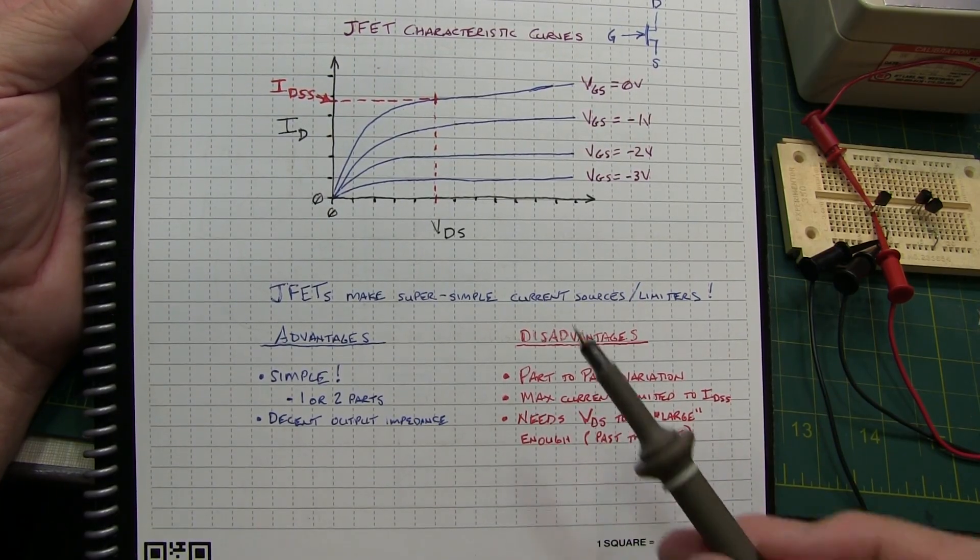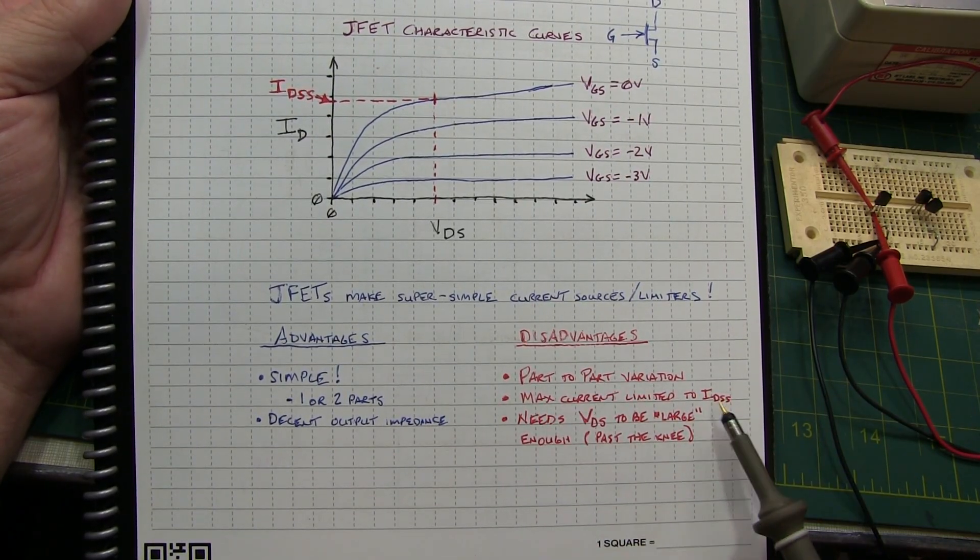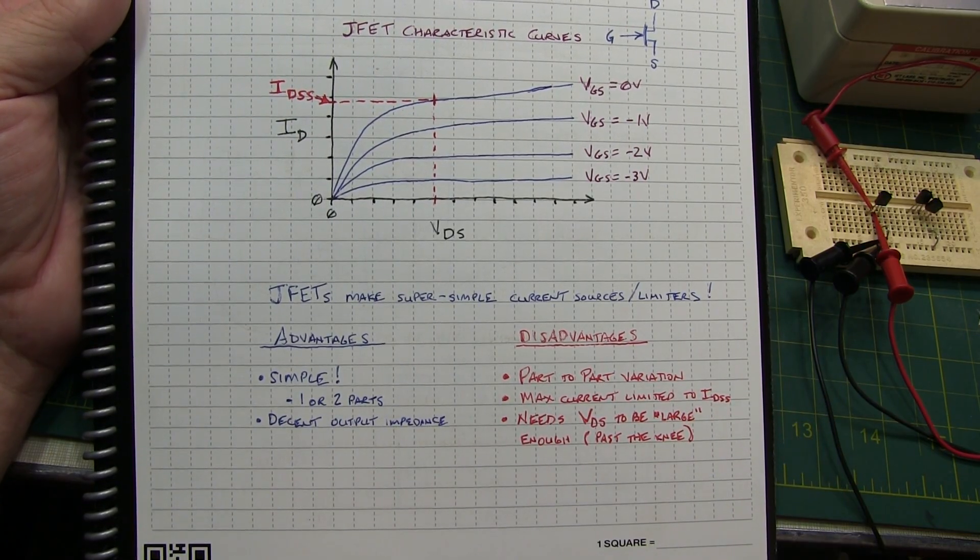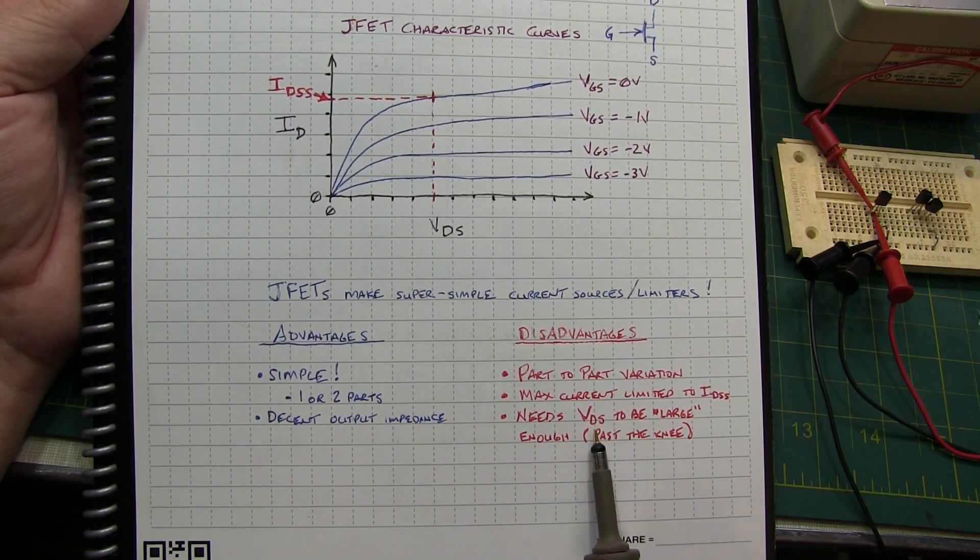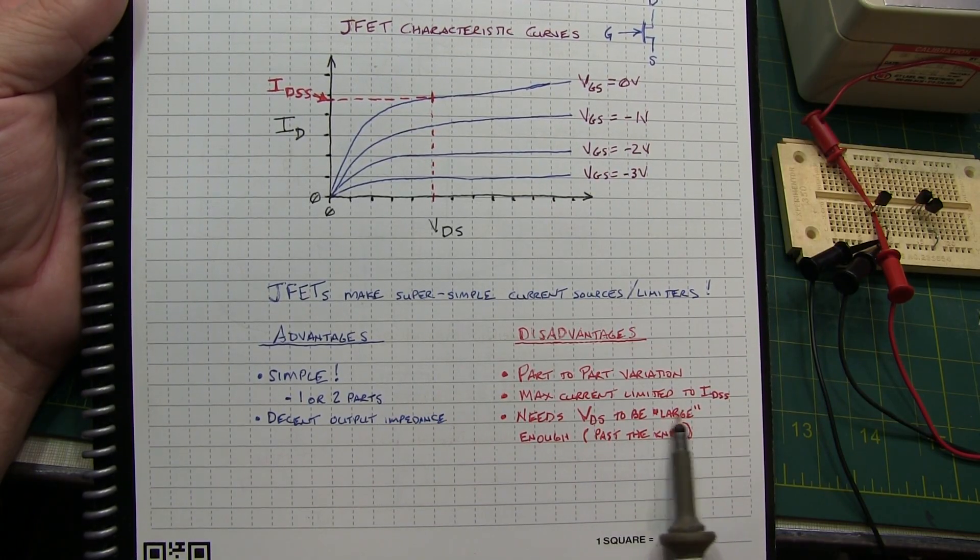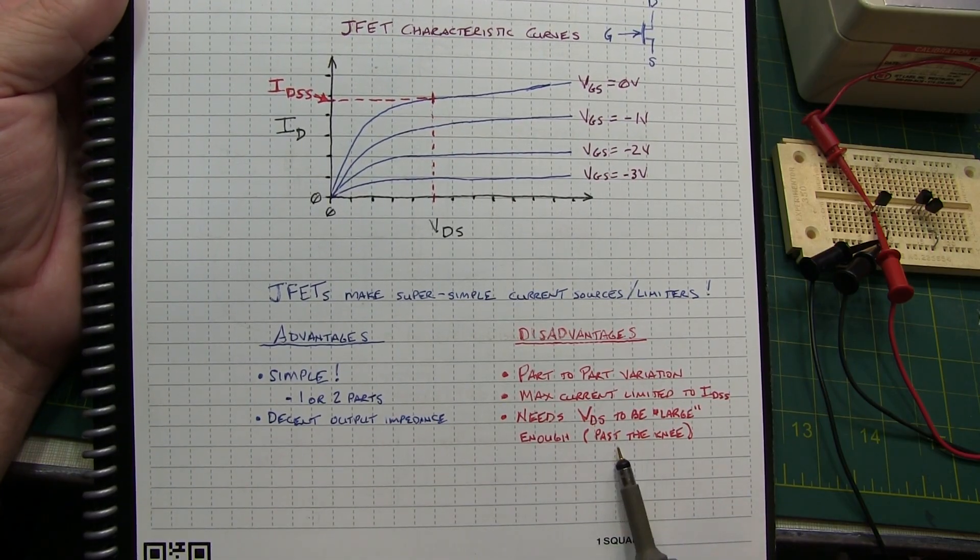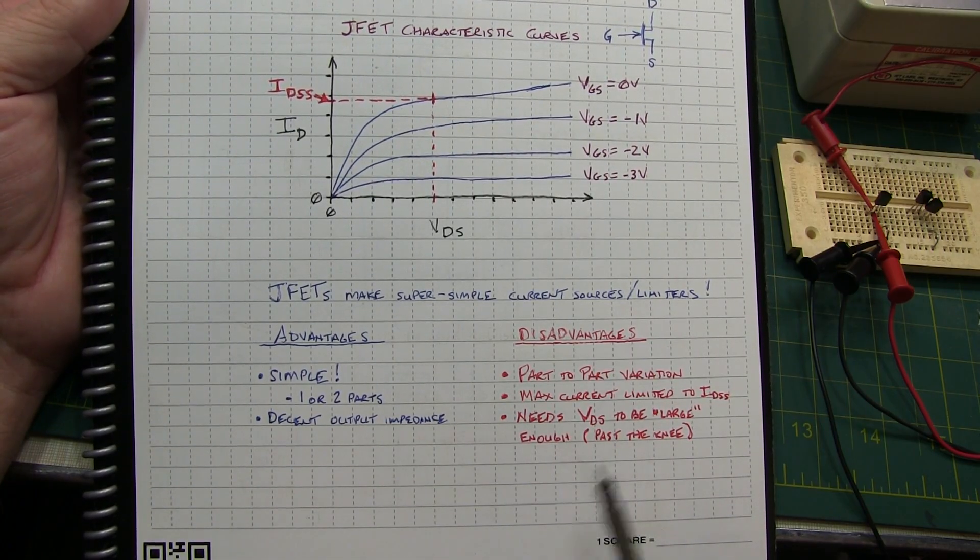Also, the maximum current with JFET current sources is limited to the IDSS, so we'll take a look at that. And also the drain to source voltage across the current sources needs to be relatively large, typically about one to one and a half times the pinch-off voltage for the JFET.